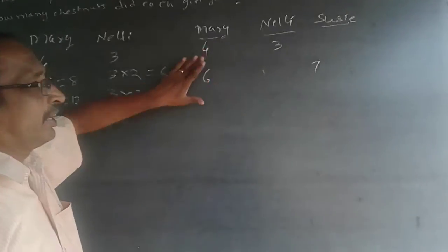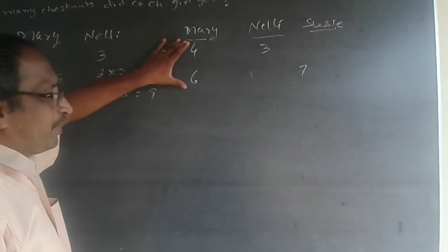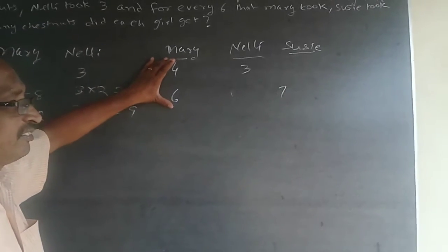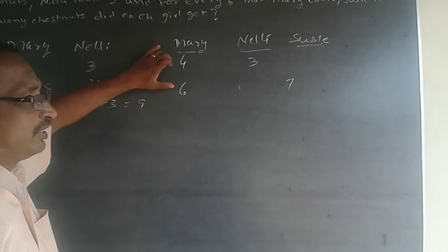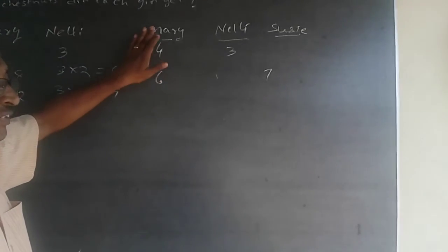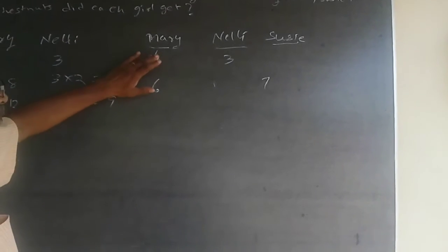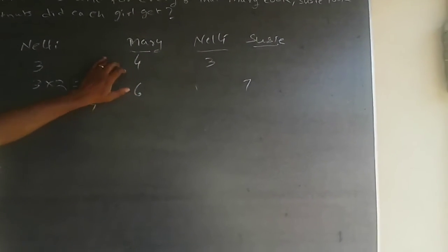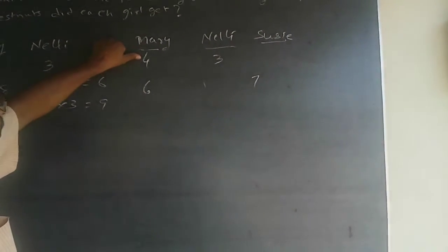Now here, Mary is a common element. The best way to do this is finding out the LCM of Mary, which is 4 and 6. 4 and 6 will be 12, but for the sake of convenience, I am making it as 6 into 4. I am multiplying this by 6, this by 4.